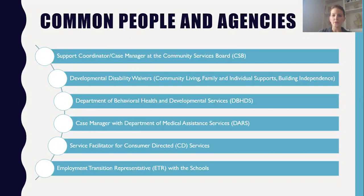Those people are helping you navigate services called the developmental disability waivers. There are three developmental disability waivers in Virginia: the Community Living or CL waiver, which has the most robust supports; the Family and Individual Supports or FIS waiver, with the largest number of people served; and the Building Independence or BI waiver, which serves individuals who are adults living in fairly independent situations.